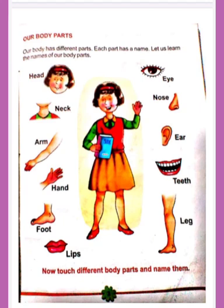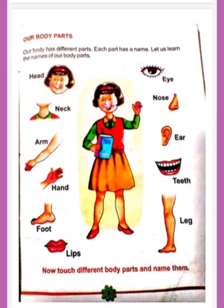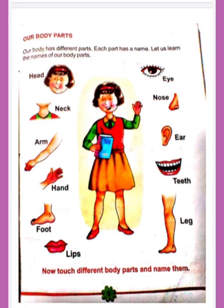Do you know how many eyes we have? We have two eyes. What is the next picture? It is the picture of neck. Move to the next picture — this is nose. Nose is always in the middle of our face. After nose, this is the arm of our body. After arm, we will move to ear. How many ears do we have? We have two ears.